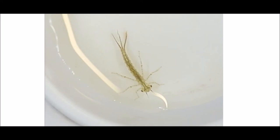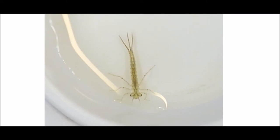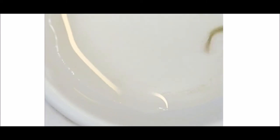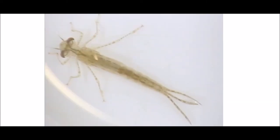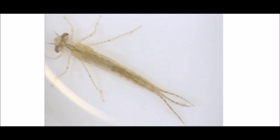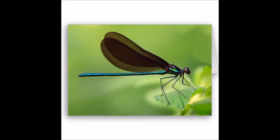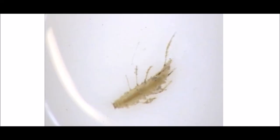Damselfly nymphs have gills on the end of their abdomen. Those three little tail-like structures take air from the water for the damselfly. You can also see the compound eyes and the six legs. In this enlargement, you can see their digestive system and also their circulatory system. The adult damselfly has wings, and you can see that the nymph does look somewhat like the adult.